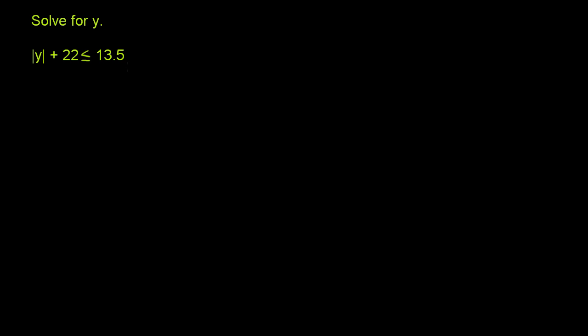A good place to start is maybe to just isolate the absolute value of y on the left-hand side of this inequality, and the best way to do that, we can subtract 22 from both sides. So let's subtract 22 from both sides.